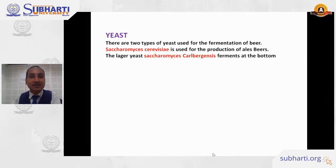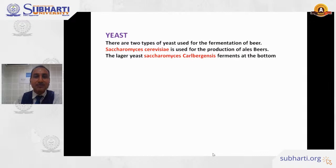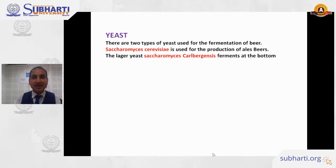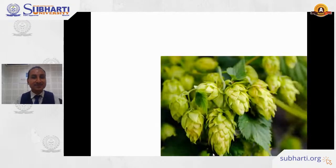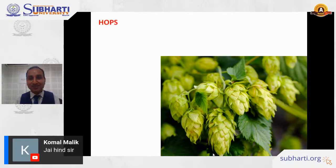We use yeast for fermentation. There are two yeasts used in making beer: Saccharomyces cerevisiae, which is used for top-fermented ale beers, and Saccharomyces carlsbergensis, which is used for bottom fermentation — the lager. The other ingredient is hops.